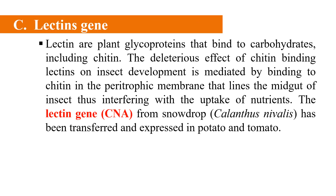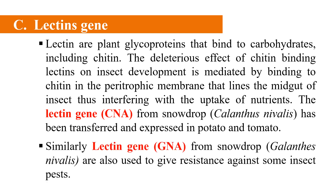A third type of gene from plants is lectin genes. Lectins are glycoproteins which bind to carbohydrates and also bind to chitin. Their deleterious effect on insect development is mediated by binding to chitin in the peritrophic membrane lining the midgut of insects, ultimately interfering with the uptake of nutrients and killing the insect. An example is the lectin gene GNA from Galanthus nivalis, which was transferred and expressed in potato and tomato to give resistance against insect pests.